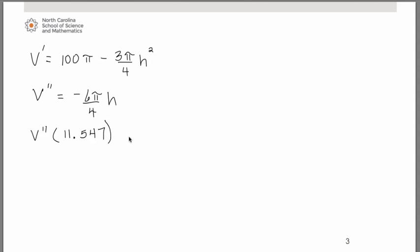Remember we want to evaluate that second derivative at the critical value we found. Remember what we're trying to do is figure out if we substitute that critical value in place of h, do we get a positive answer or a negative answer? Well in this case it's obviously a negative answer. Think about what that tells us.